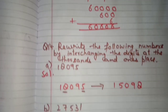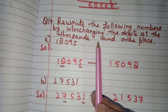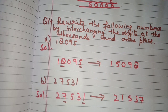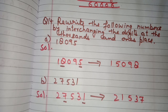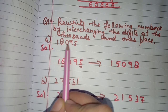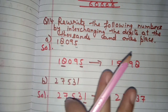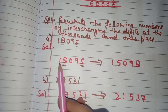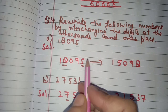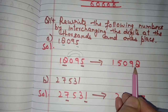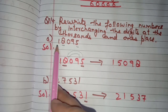Question number 14: rewrite the following numbers by interchanging the digits at the thousands and ones place. The number given is 18,095. We interchange the digits at thousands (8) and ones (5) place — remaining digits stay the same. We get 15,098. Earlier it was eighteen thousand ninety-five, now it is fifteen thousand ninety-eight.